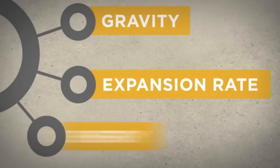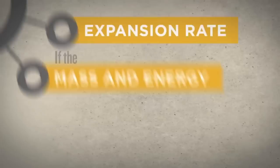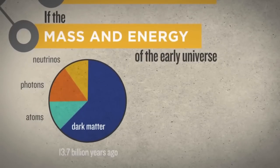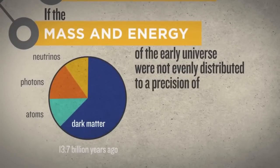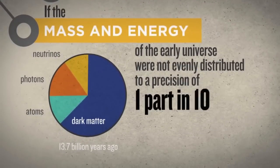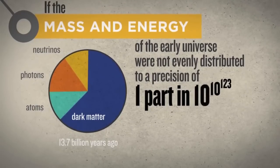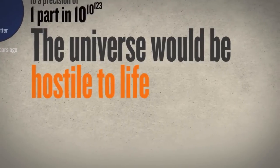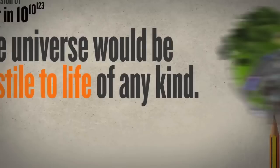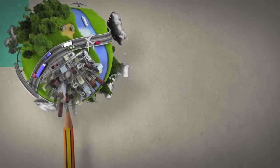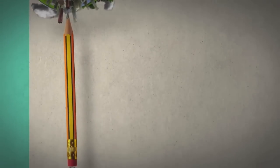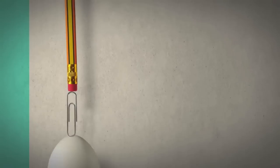Another example of fine-tuning: if the mass and energy of the early universe were not evenly distributed to an incomprehensible precision of one part in 10 to the 10 to the 123rd, the universe would be hostile to life of any kind. The fact is, our universe permits physical, interactive life only because these, and many other numbers, have been independently and exquisitely balanced on a razor's edge.